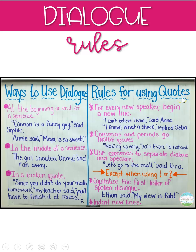Don't forget your grammar and capitalization rules. We're going to skip the first one for now and go straight to the second. Commas and periods go inside the quotes. For example: 'Waking up early,' said Evan, 'is not cool.' Notice the comma that separates the dialogue from the speaker is inside the quotation marks, and notice that the period at the very end also goes inside. If you're using any other types of punctuation, such as question marks or exclamation points, they also go inside the quotation marks.